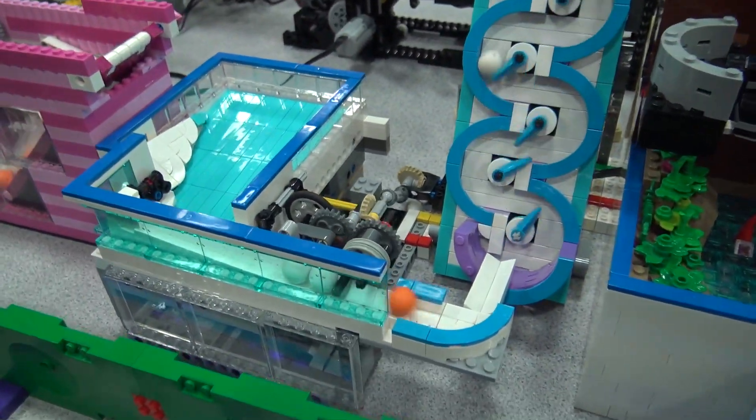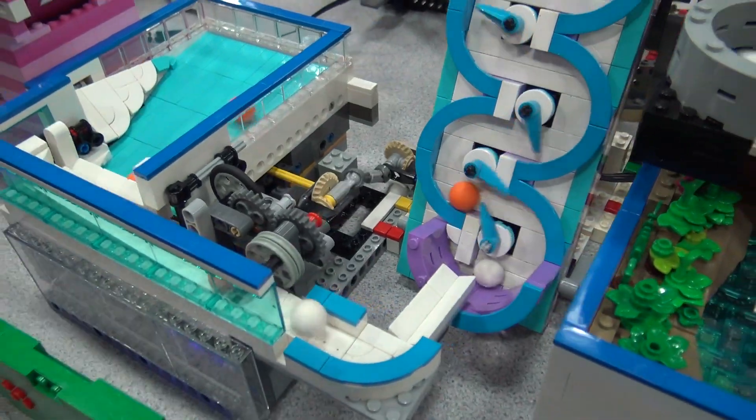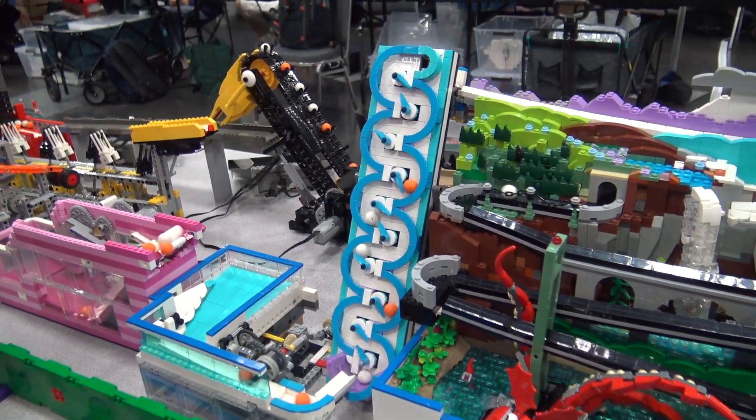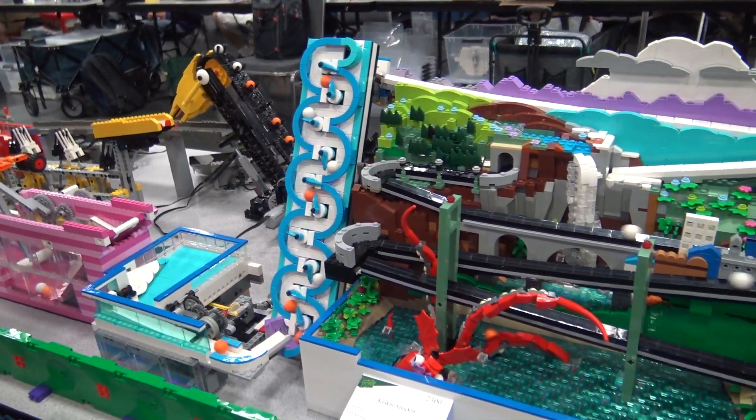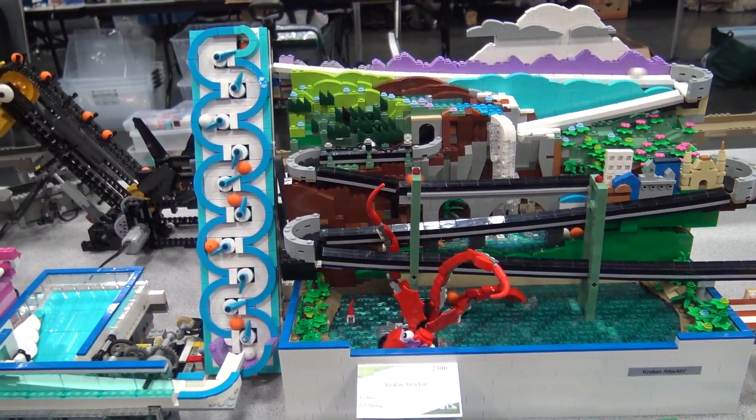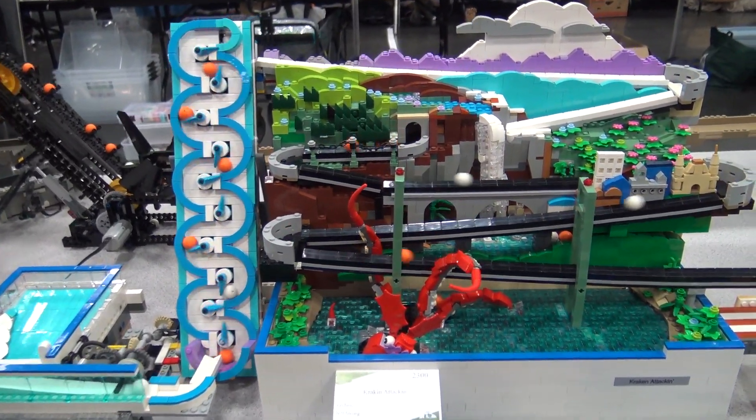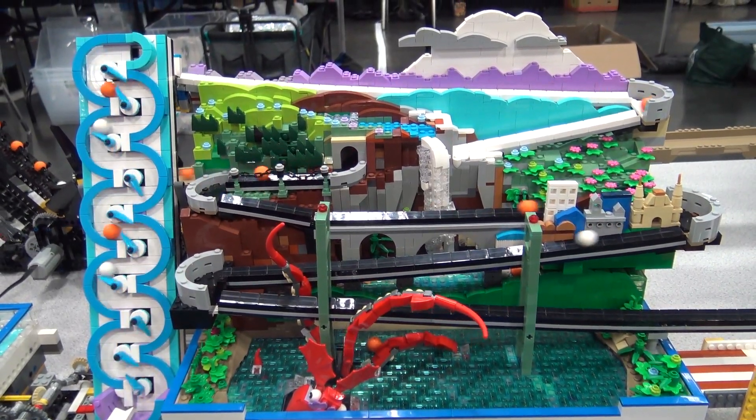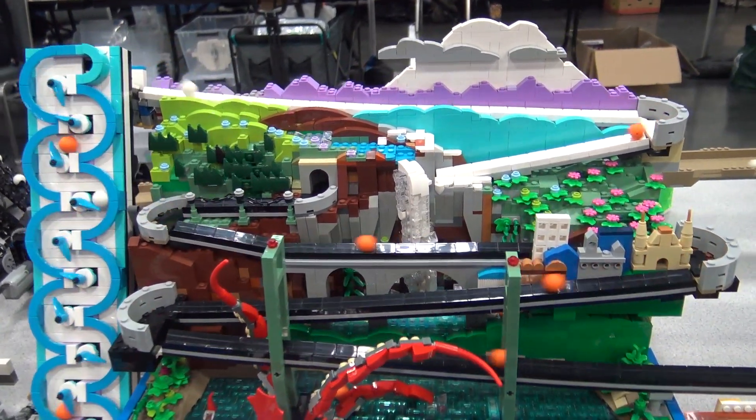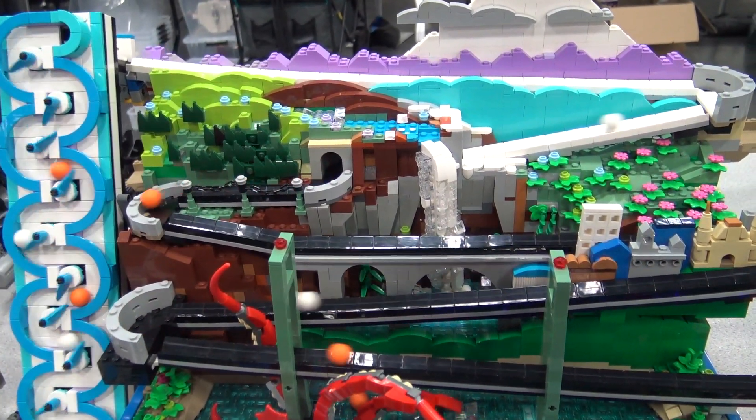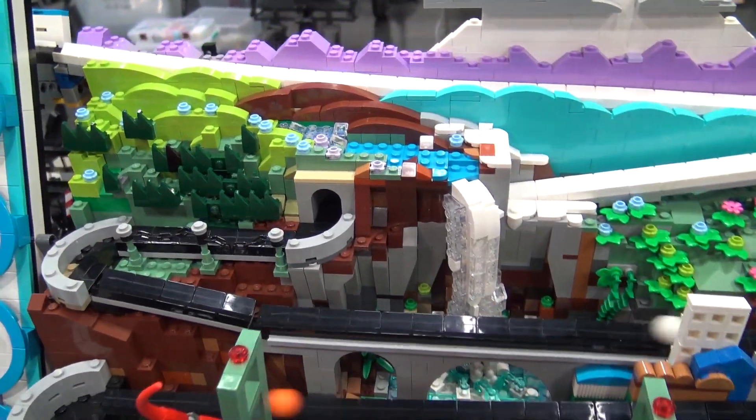This is feeding into Jeff Strong's Cracken Attacken. The whole thing from the input bin and the serpentine lift to the themed fall ramp with the Cracken. Jeff won best GBC here last year for this, not surprisingly. It's back again with the inevitable improvement on reliability that we all add to things.